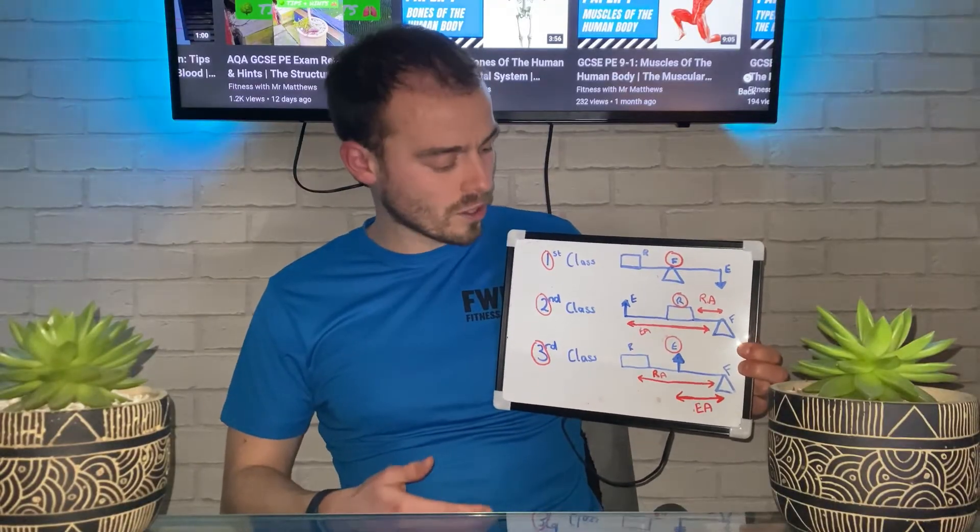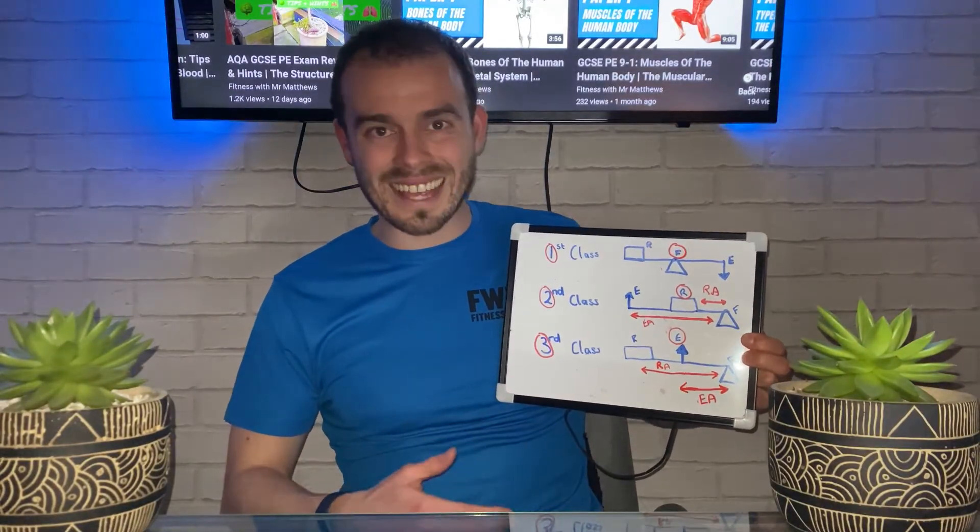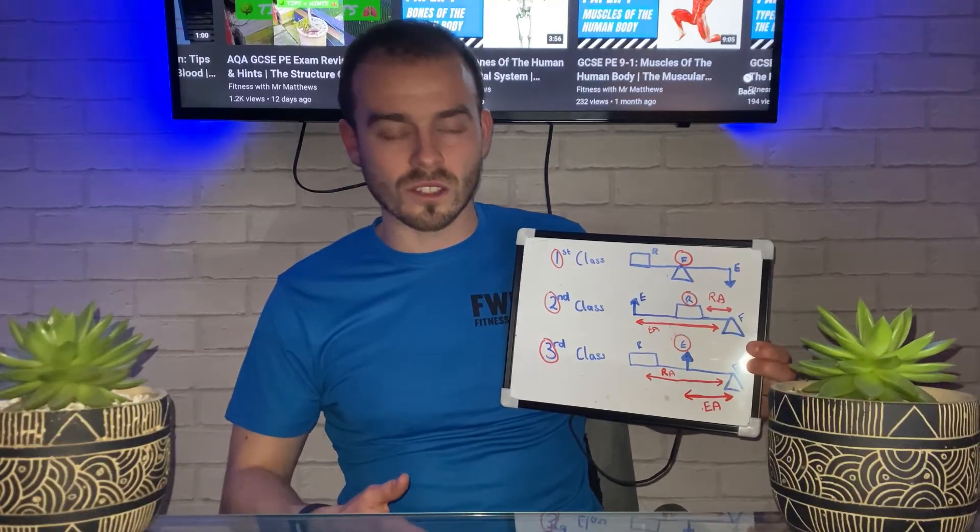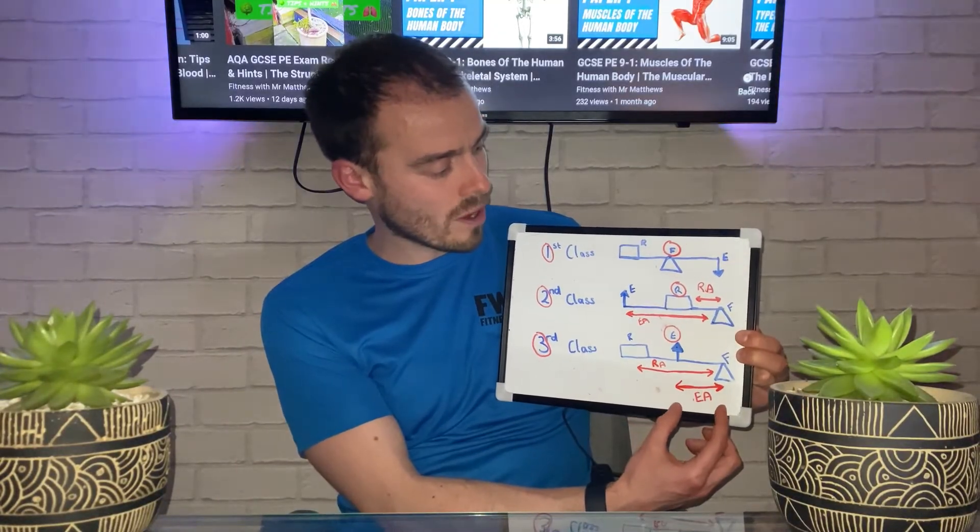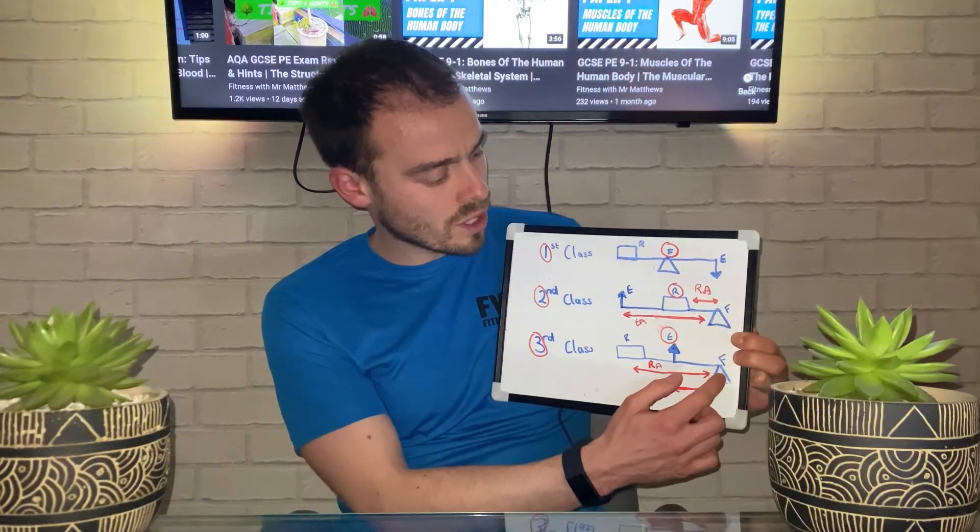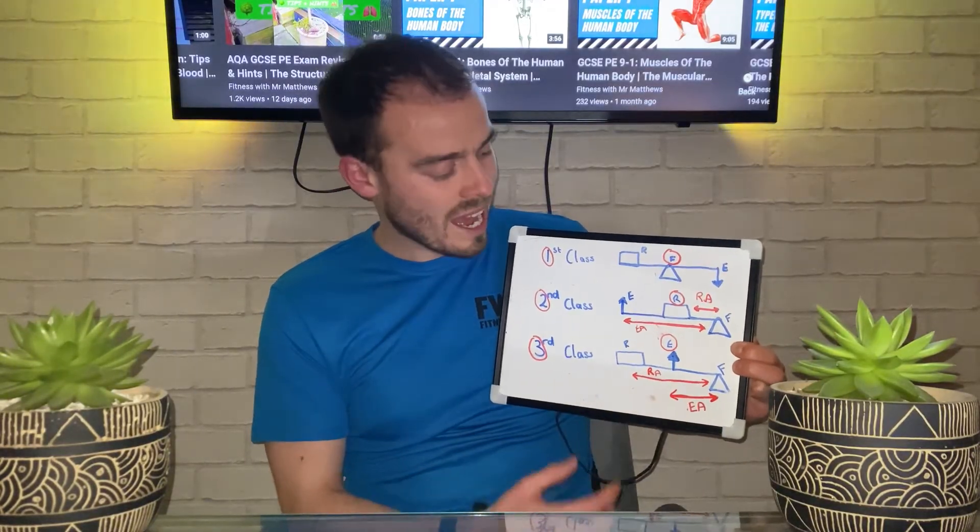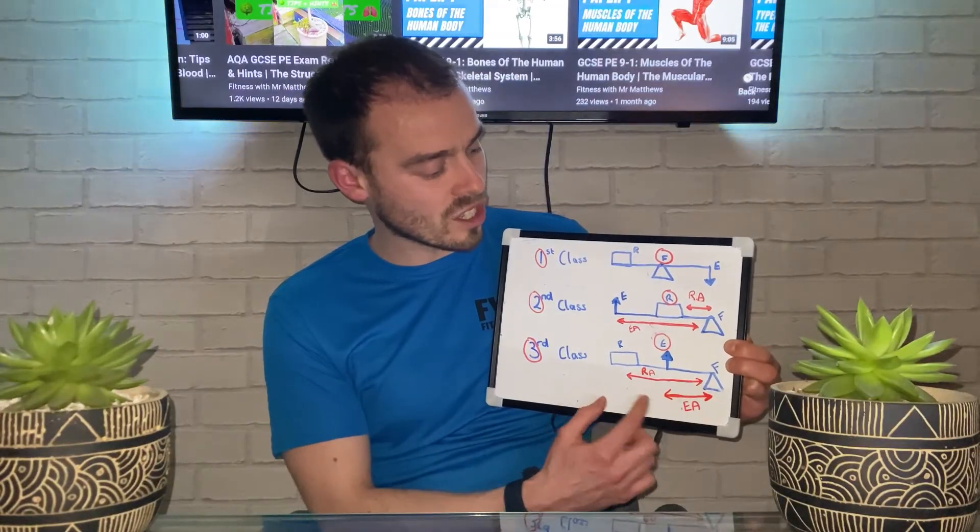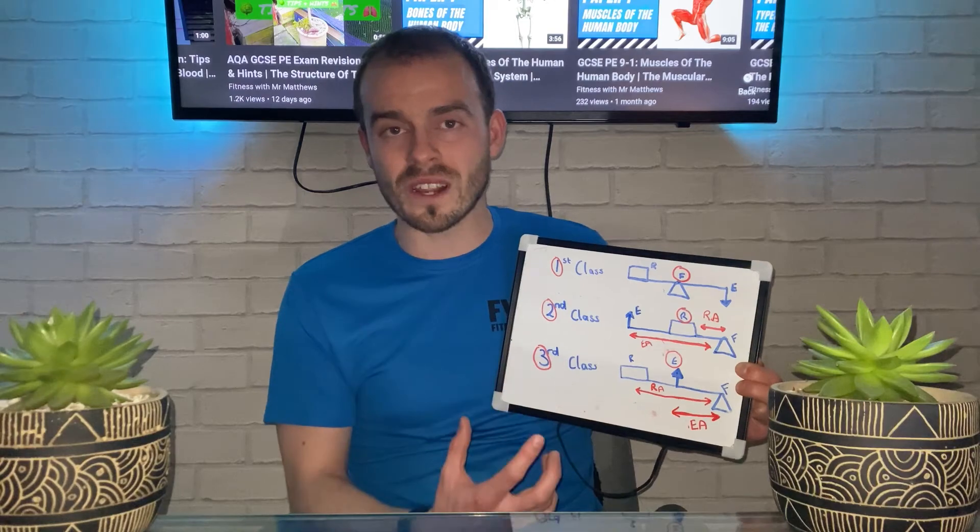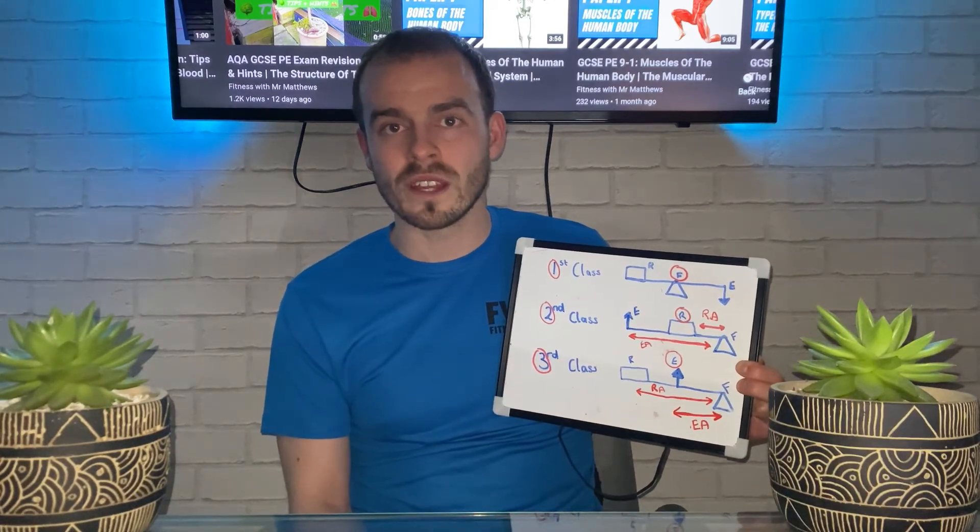Moving on to a third class lever system, it has a mechanical disadvantage because unlike the second class lever system, it has a short effort arm. The distance between the fulcrum and the effort is short, but the resistance arm is long, so the fulcrum and resistance are further apart. For that reason, it has a mechanical disadvantage.